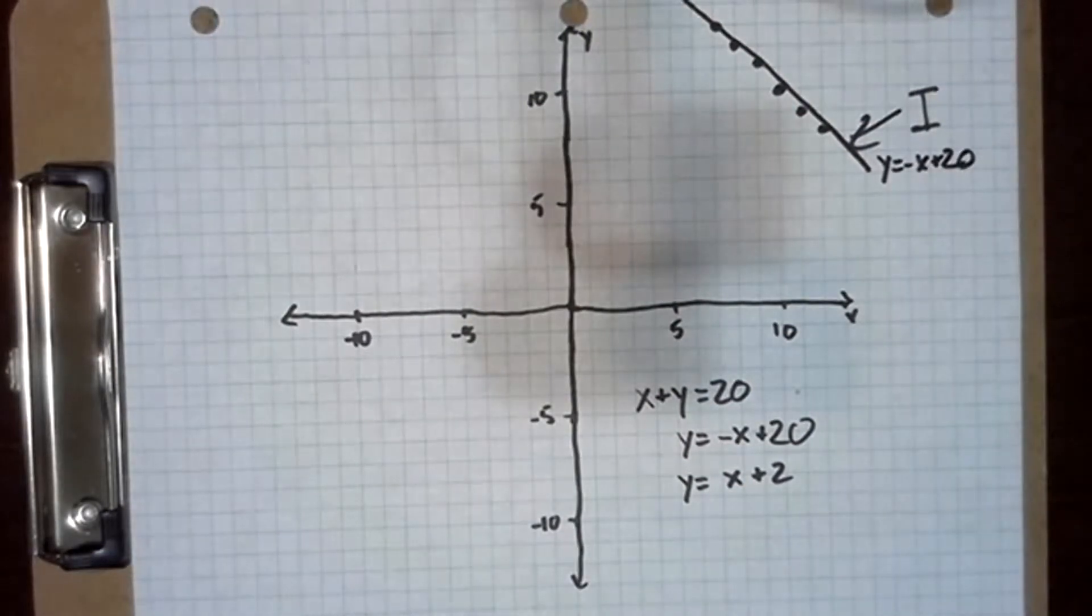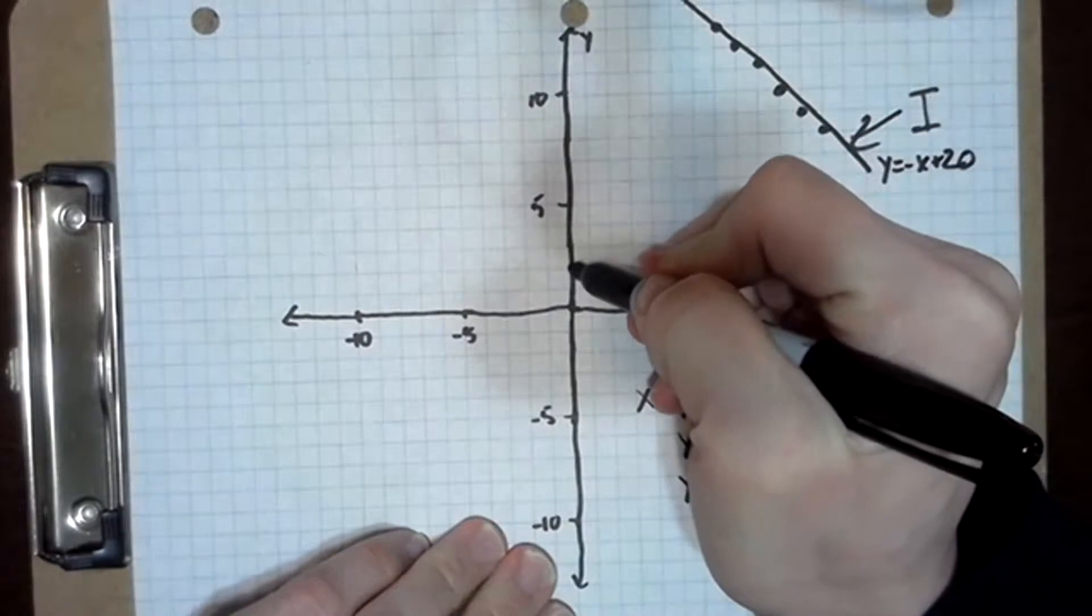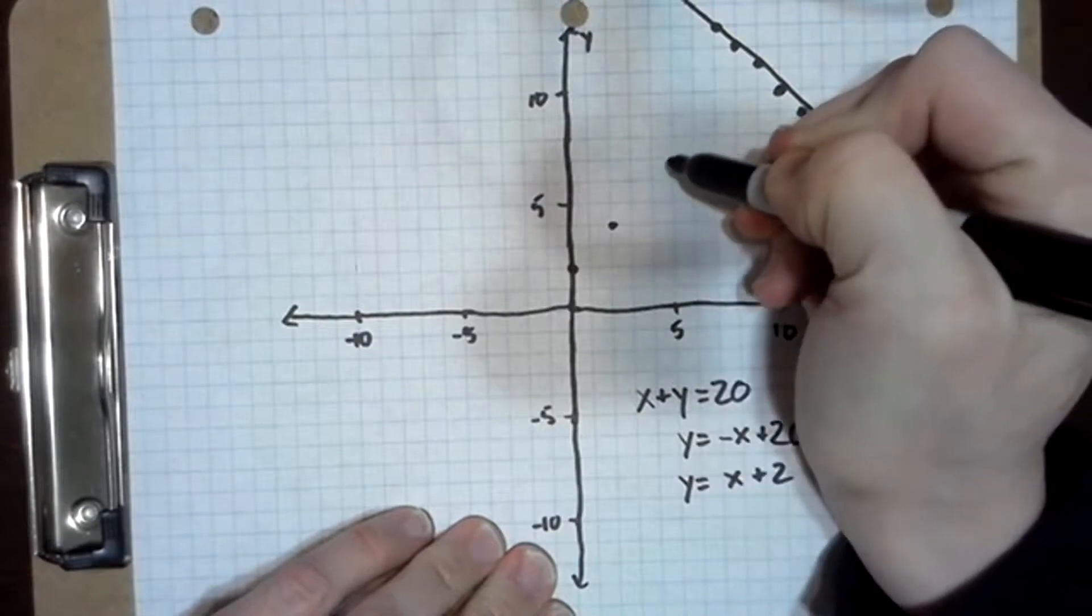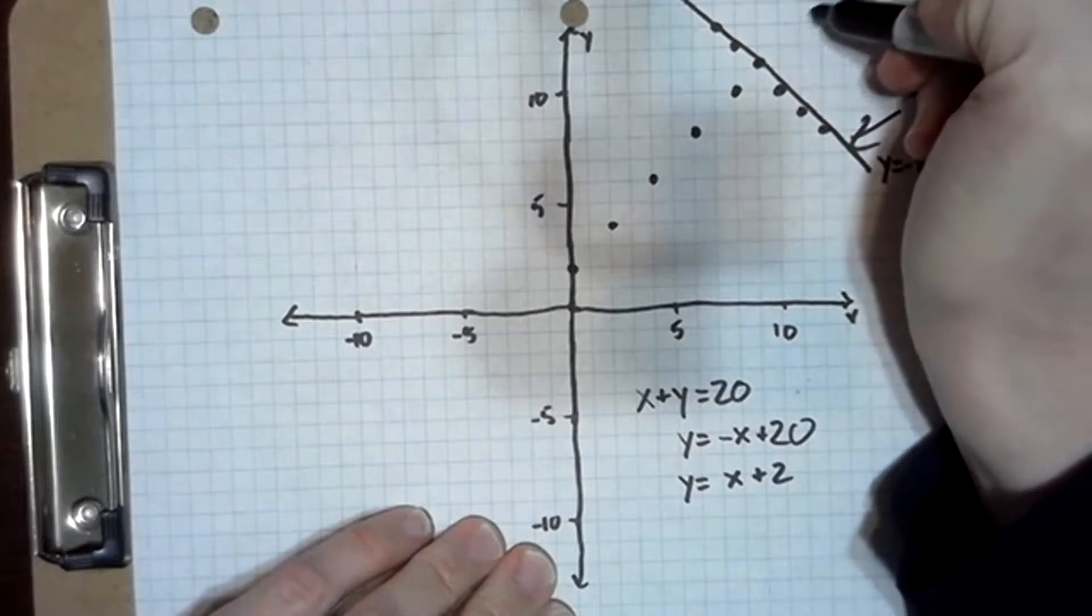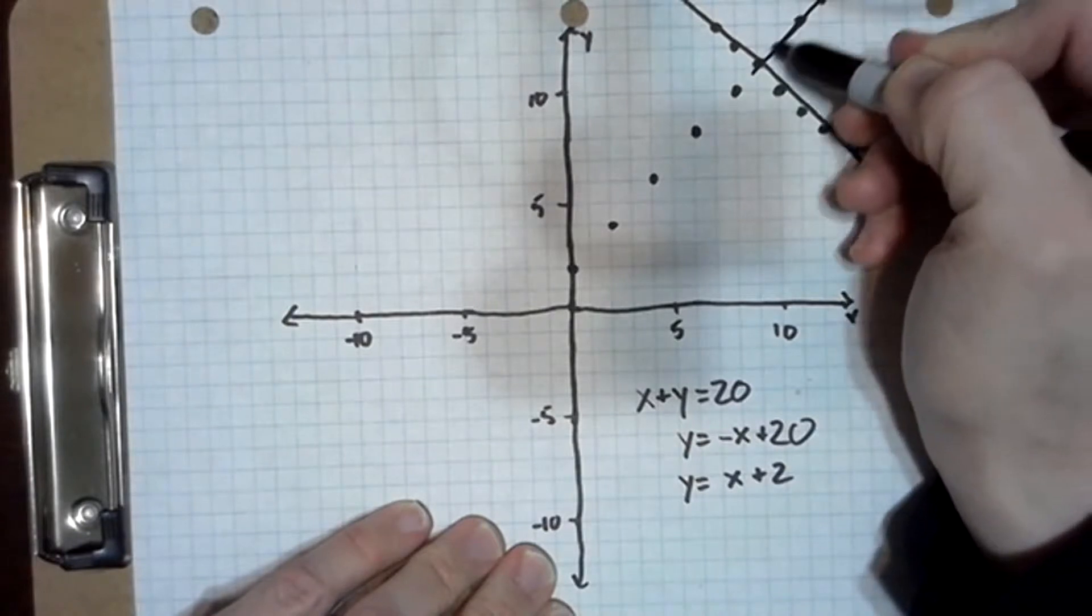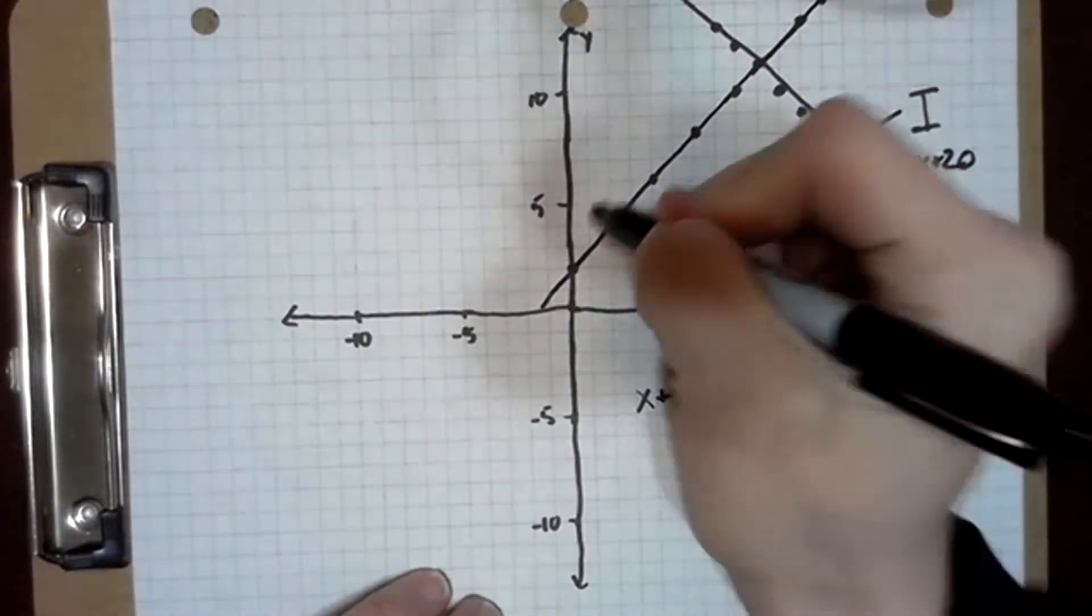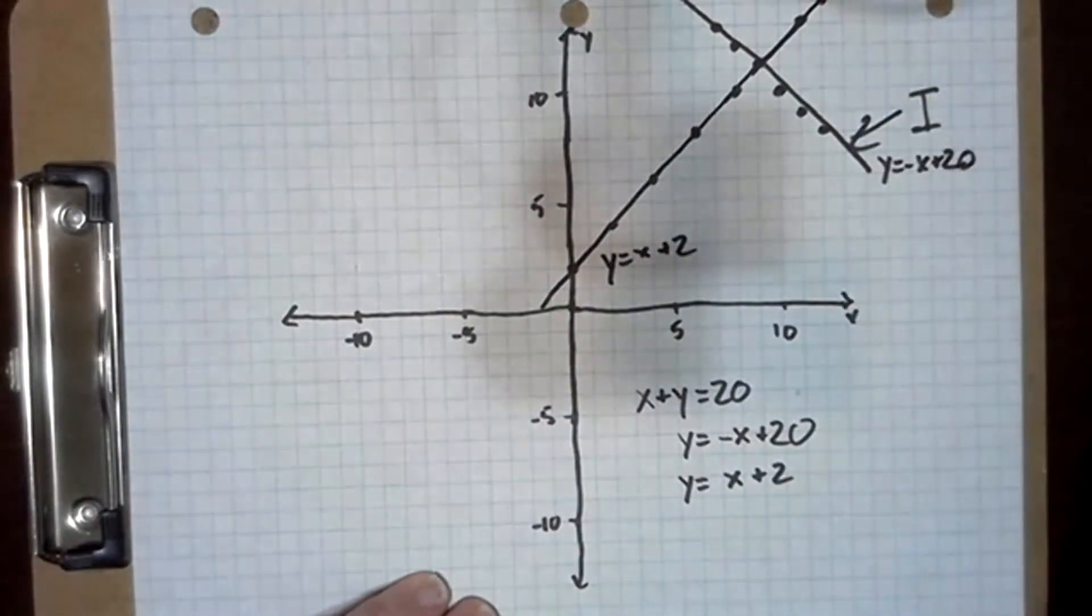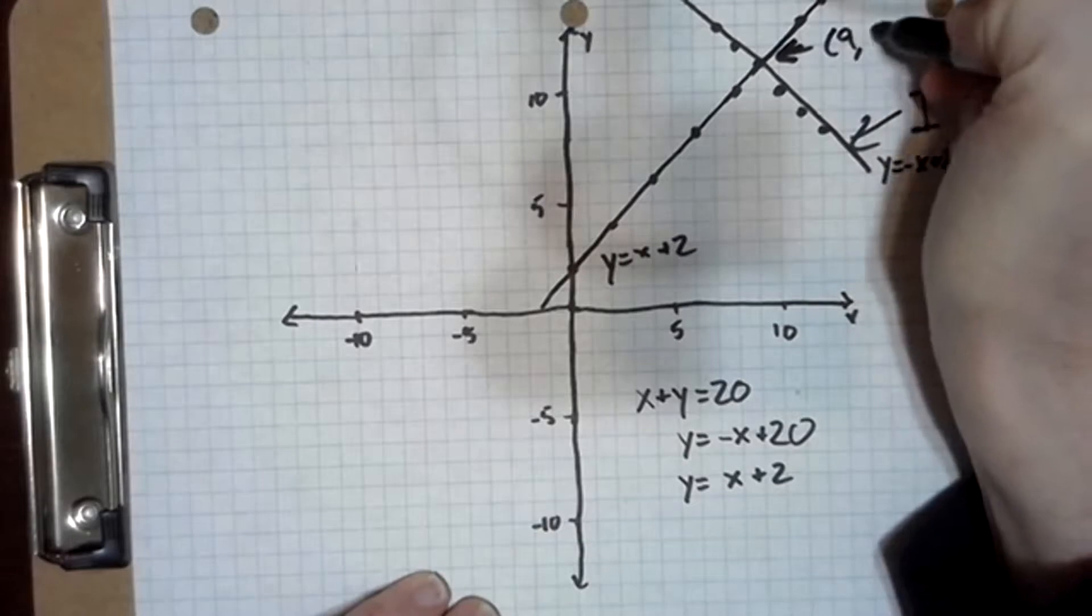That's good enough. This is the line y equals negative x plus 20. And then we've got the line y equals x plus 2. Well that's an easy one too - if x equals 0, y is 2, and if x equals 2, y is 4, and so on and so forth. But there's that line too, and this is y equals x plus 2. Okay, well we can clearly see they intersect right here and that is the point 9, 11.